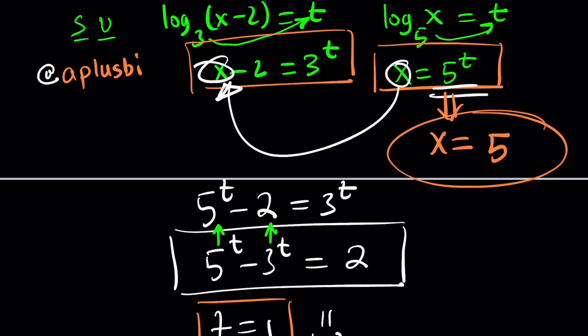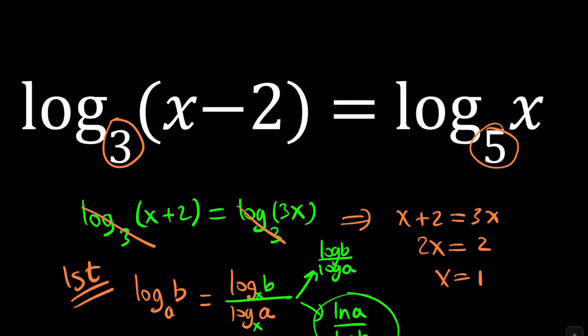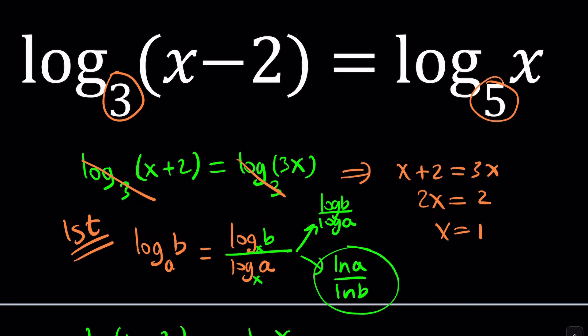If t is 1, x is equal to 5. Therefore, 5 is the only solution. You can go back and check this. Plug in 5: 5 minus 2 equals 3, and log₃(3) is 1. Log₅(5) is also 1. They're equal. And that's it.